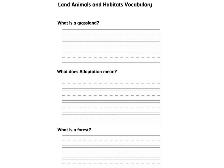Here are the spots to fill in our definitions — there were three of them and I did highlight them in different colors. You can go back and look through the book, or rewind the video to look at it. The first one is: what is a grassland? The second is: what does adaptation mean? And number three: what is a forest?